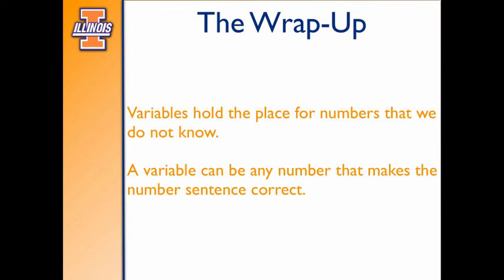So let's wrap this up. We know that variables hold a place of a number that we don't know yet, and we know that the variable can represent any number that makes the number sentence correct just like we saw in our previous two or three examples.